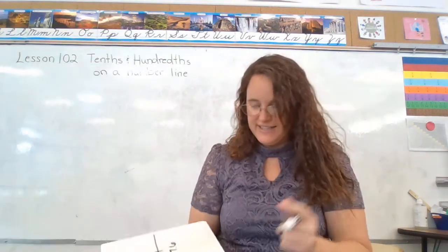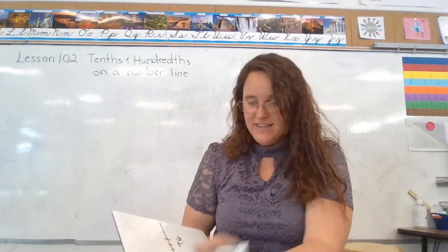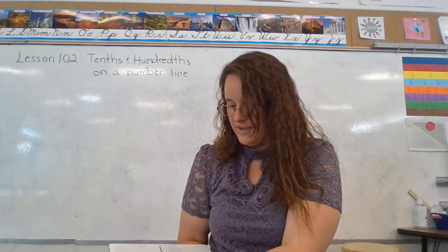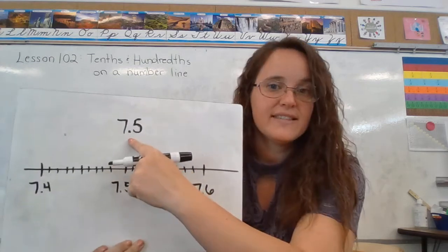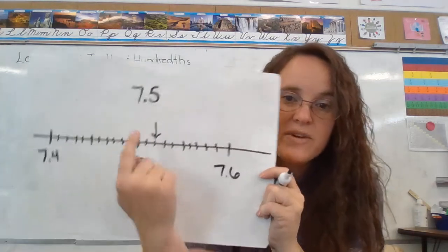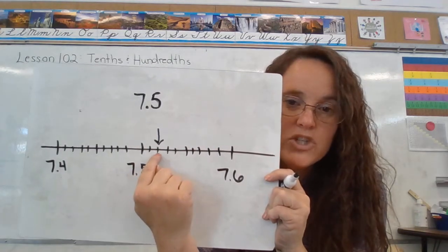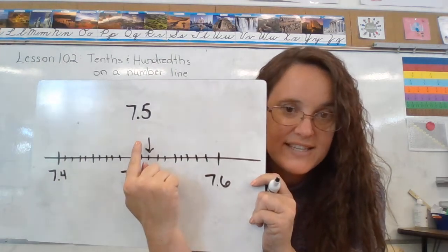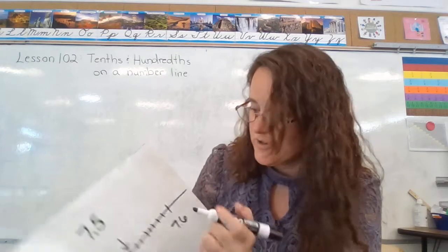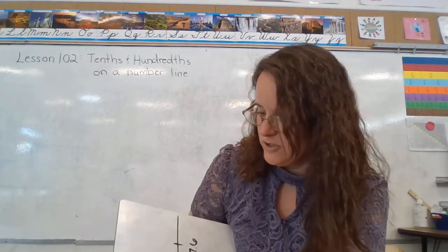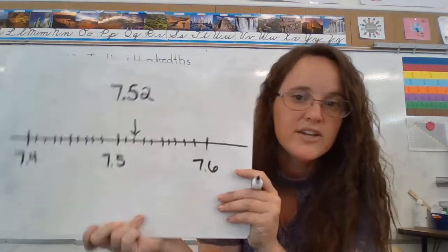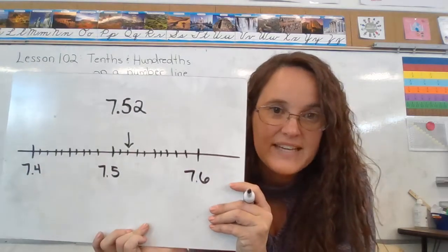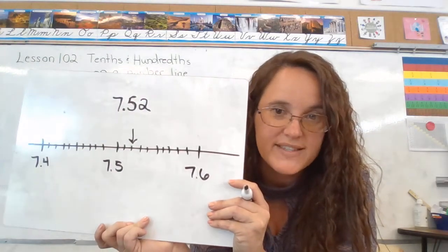So how do we write that as a decimal? We're at 7 and our 5 tenths, but then we've gone 1, 2 notches further. So 5 tenths is the same as 50 hundredths, plus we have 2 more hundredths. So our answer would be 7 and 52 hundredths.